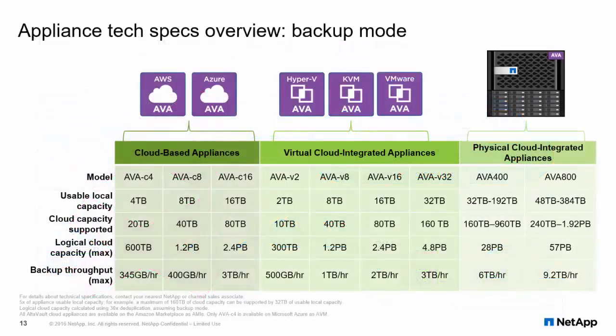Let's take a quick look at the AltaFault appliance models. They come in three categories: cloud-based, virtual, and physical. The models each provide a cache capability up to 384 terabytes and a cloud-supported capacity up to five times that of the local cache capacity. Accounting for deduplication, the amount of actual data that you can send to an AltaFault may be up to 30 times this amount, meaning that you can store almost 60 petabytes into an AltaFault AVA800 appliance. The throughputs represent the maximum ingest throughput you can achieve from the backup application to an AltaFault, which is up to 9.2 terabytes with the AVA800 model today.